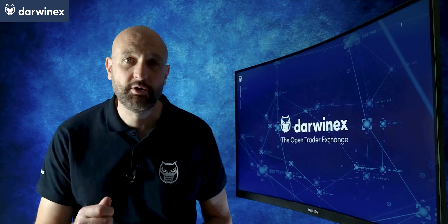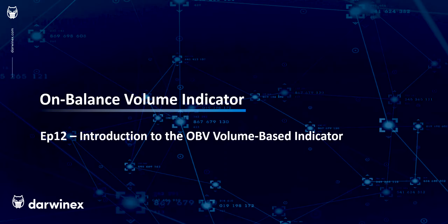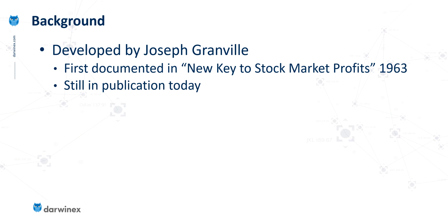Let's first briefly look at the background to this indicator. It was first created and documented by Joseph Granville way back in 1963, and the book he documented it in was called New Key to Stock Market Profits. I'm not recommending this book — I've never actually read it — but it is still in publication and from what I can see it gets fairly good reviews.